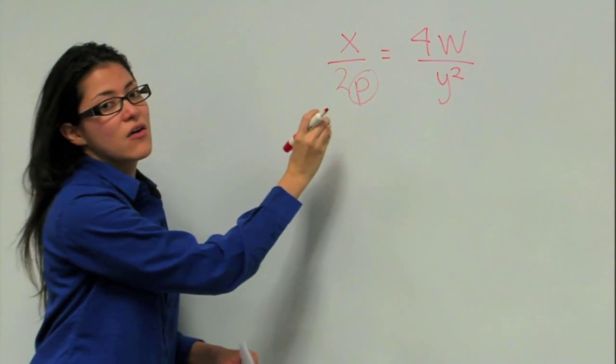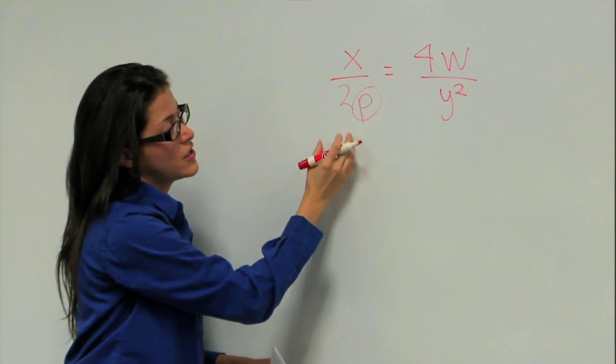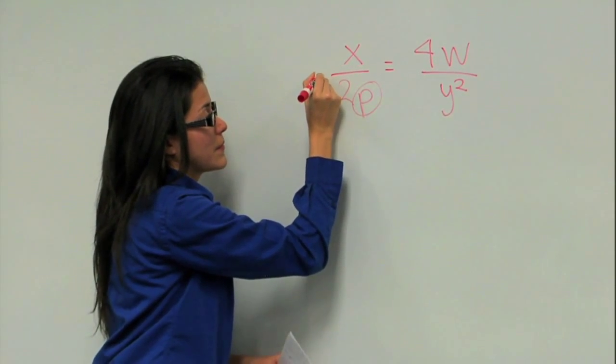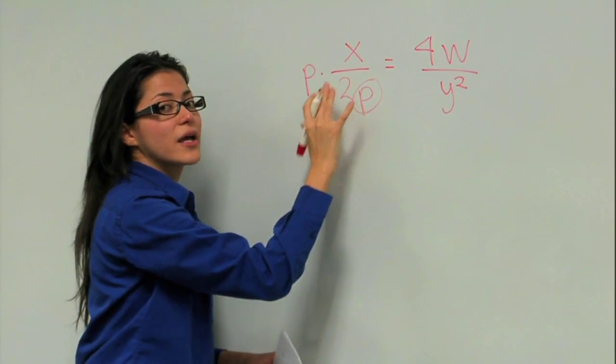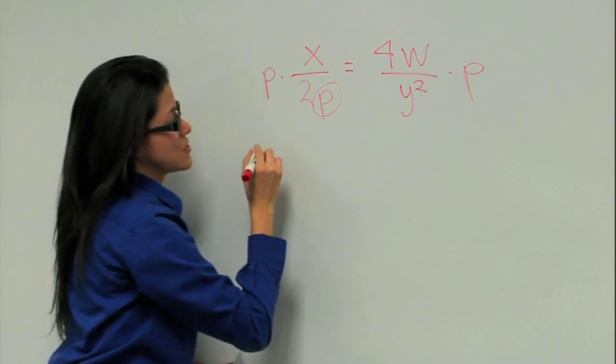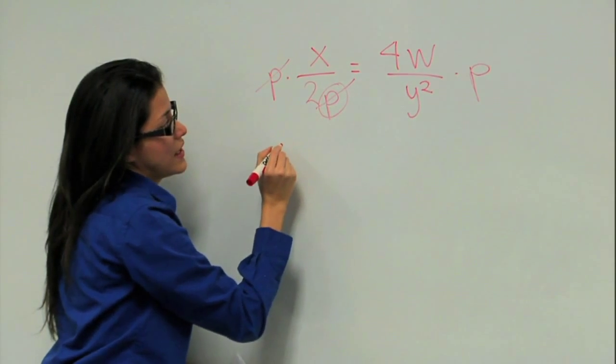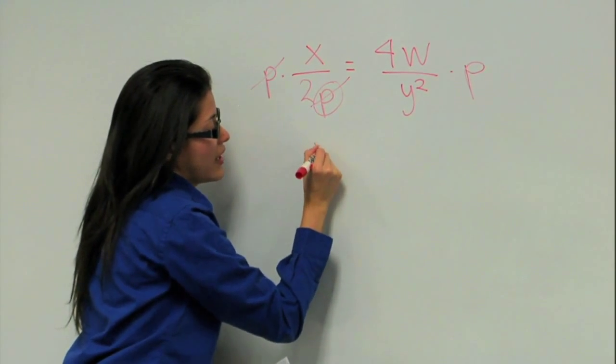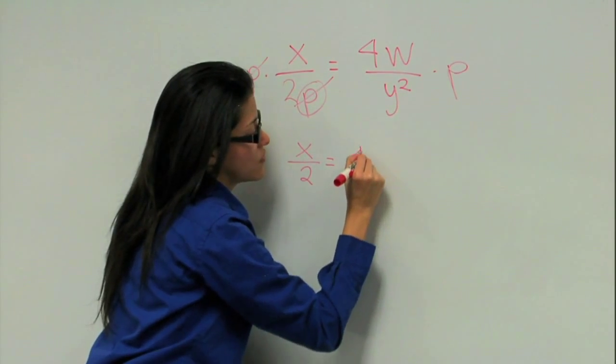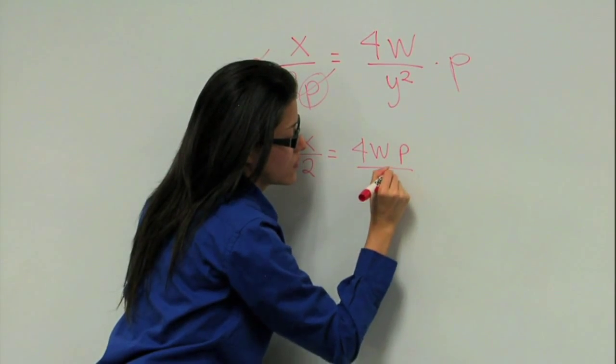We need to have it by itself, but on the top, right? So if it's dividing on this side, that means we have to multiply by P. And again, we multiply on both sides. So now that way we can cancel P on this side. And rewriting this, we have X over 2 equals 4 times W times P over Y squared.